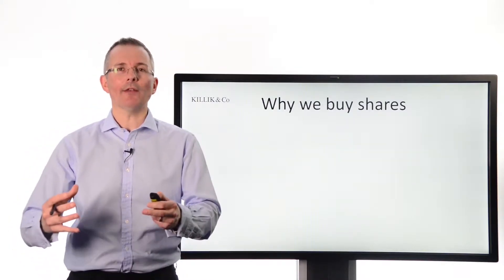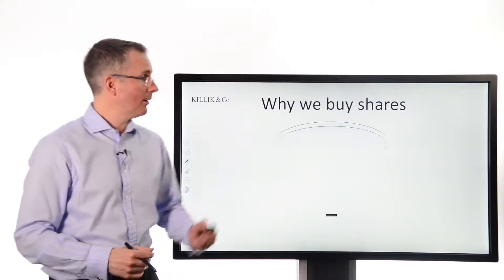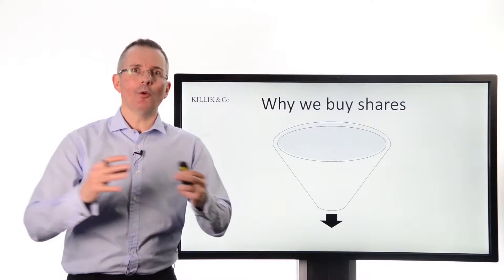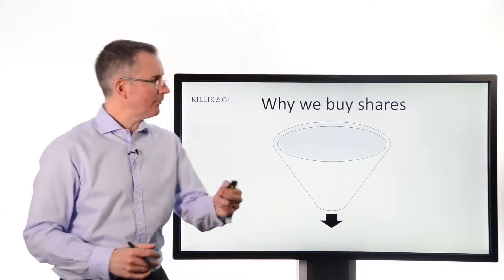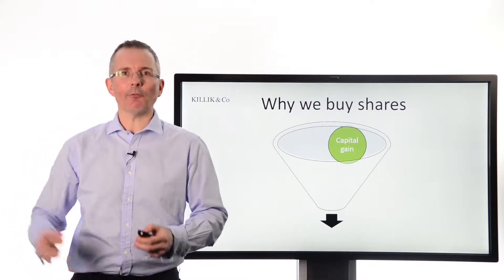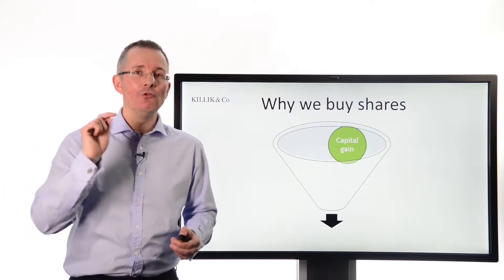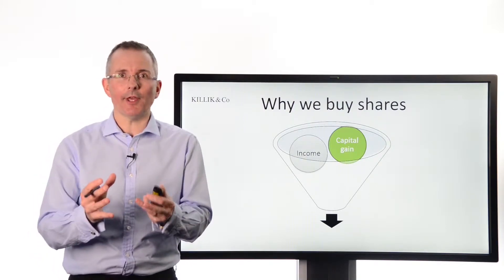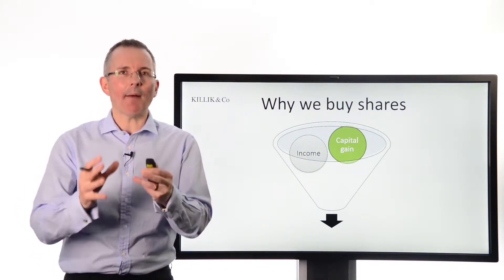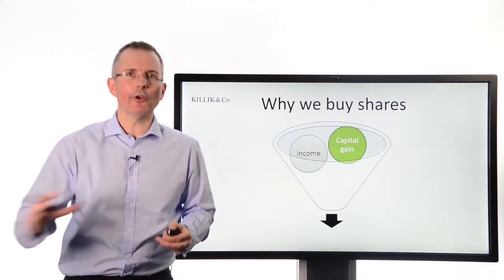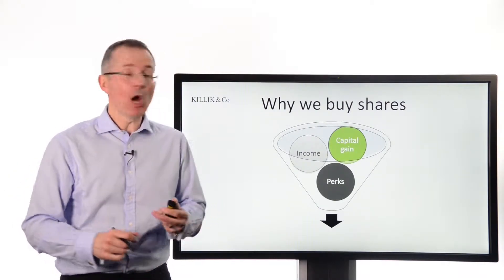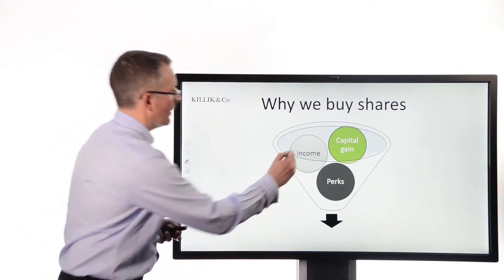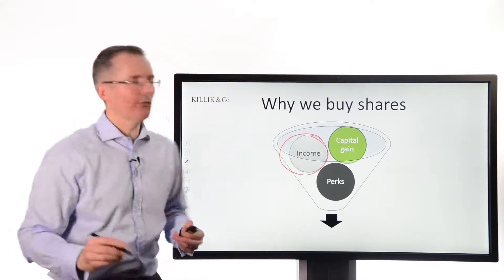Why do we buy shares? Where do dividends and income fit into the overall picture? Principally, most people buy shares for one of two good and one subsidiary reason. The two good ones: capital gains — we expect shares to go up more than they go down. But what I'm going to focus on is the income side of things. It's easily forgotten how important income is to your long-term return from shares. Some companies also offer discounts on products and services, but really this video is all about income.